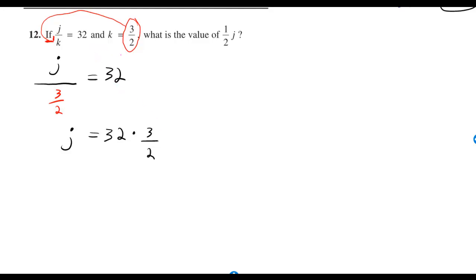If j over k is equal to 32 and k is equal to 3 halves, what is the value of half j?